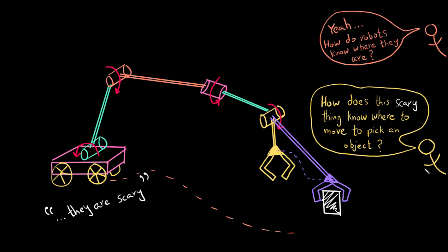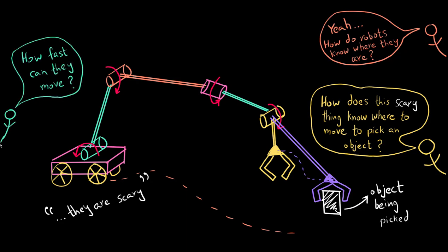And then how does it know how much the motors need to rotate in order to move the object from point A to point B? Is there a limit to how fast the robots can move and do a task? Or have you ever wondered, is there anything, literally anything in the world that the robots cannot do?